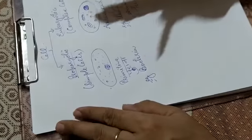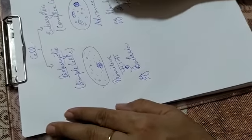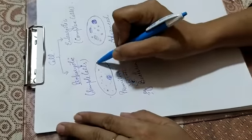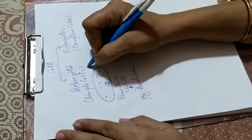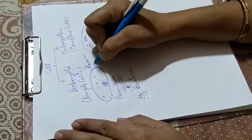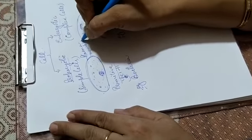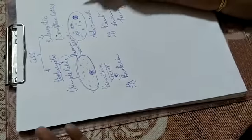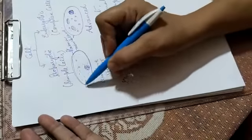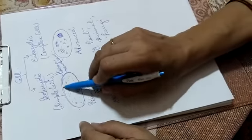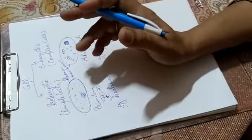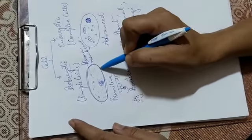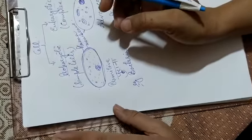Now, the structures of the eukaryotic cell we will study in detail. We have already studied the structure of the plasma membrane. This plasma membrane is present in both eukaryotic and prokaryotic cells. It separates the external environment from the internal contents of the cell and provides protection. So the plasma membrane has a function of protection. I have told you that it is semi-permeable.